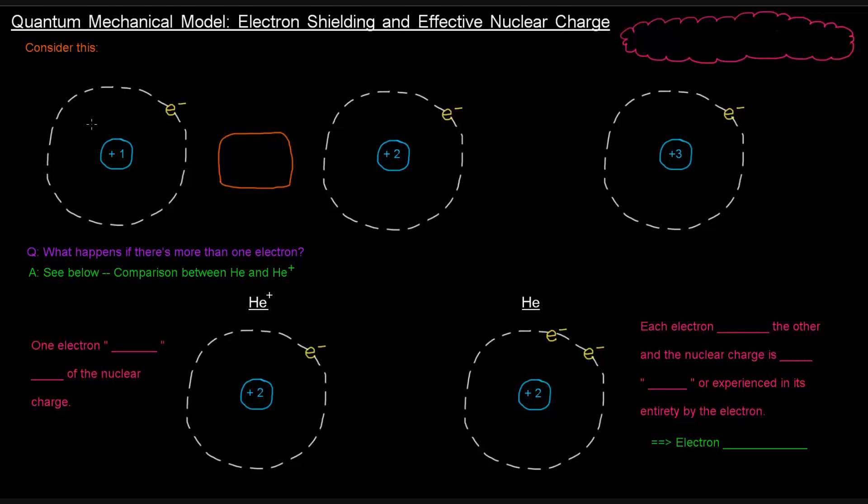We know that opposite charges attract, so the nucleus having a positive charge is going to attract the electron towards it. It's an attractive force, an electrostatic force that's pulling on this electron to pull it in.